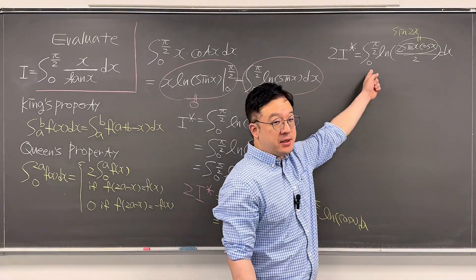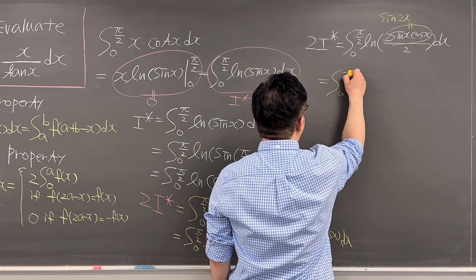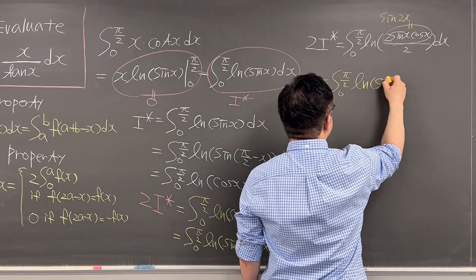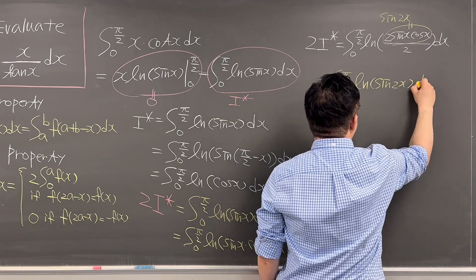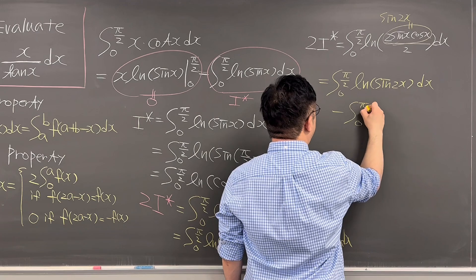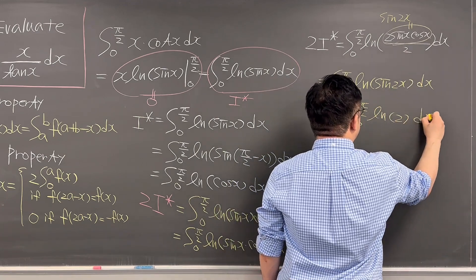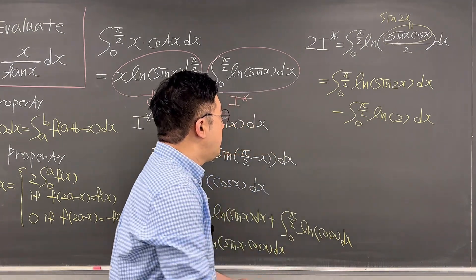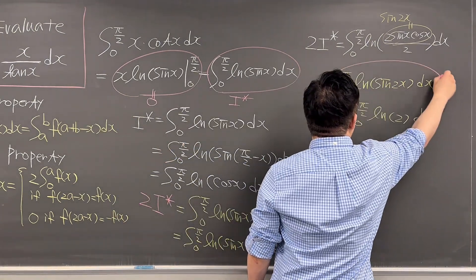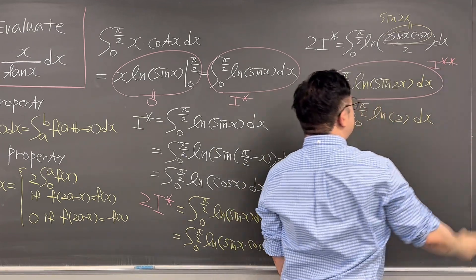Then we can separate this into two integrals: the integral from 0 to pi over 2 of ln(sine 2x) dx, minus the integral from 0 to pi over 2 of ln 2 dx. I'll call the first one I double star.